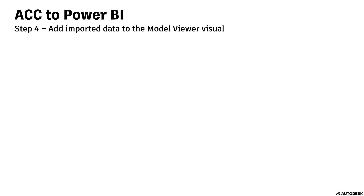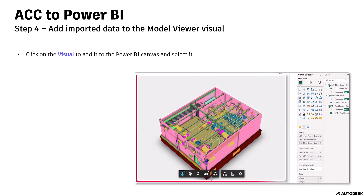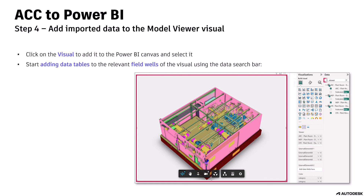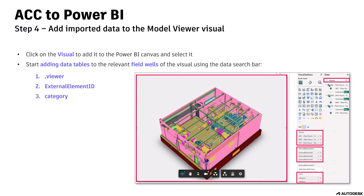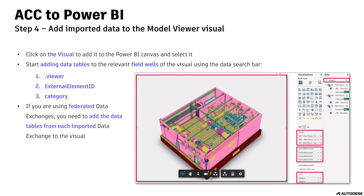Step 4: add imported data to the Model Viewer visual. Click on the visual to add it to the Power BI canvas and select it. Start adding data tables to the relevant field wells of the visual using the Data Search bar. Search for Viewer, External Element ID, and Category. If you are using federated data exchanges, you need to add the data tables from each imported data exchange to the visual.